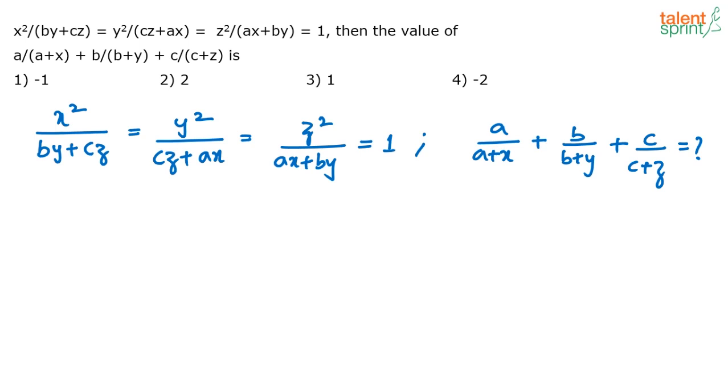Now if you have solved enough questions on algebra you would know that the one thing that you should look for is symmetry. When I look at these equations given on the left hand side there is some symmetry there. I mean you look at all the numerators. All these are squares. x squared, y squared, z squared. Look at the denominators. We have got by plus cz, cz plus ax, ax plus by. And all these three are equal to 1.